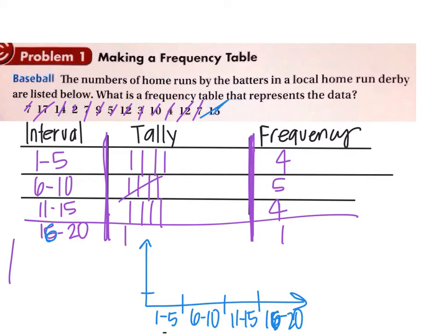So this is your frequency up here: 1, 2, 3, 4, 5. And then you're going to put a bar that does not overlap and does not have gaps in your histogram.